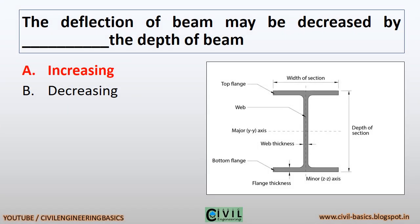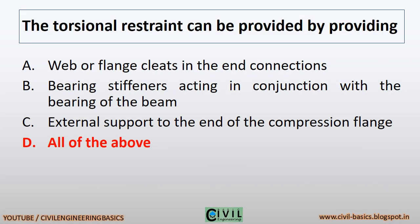The deflection of a beam may be decreased by increasing the depth of the beam. Torsional restraint can be provided by: web or flange cleats in the end connections, bearing stiffeners acting in conjunction with the bearing of the beam, external support to the end of the compression flange — all of the above can be provided for torsional restraint.